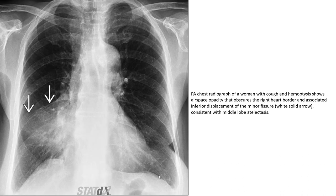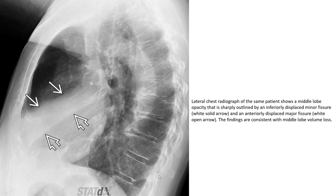PA radiographs show an opacity that obscures the right heart border with associated inferior displacement of the minor fissure, solid arrow indicated, consistent with middle-lobe atelectasis. Another PA radiograph shows a middle-lobe opacity sharply outlined by an inferiorly displaced minor fissure and an anteriorly displaced major fissure, with findings consistent with middle-lobe volume loss.